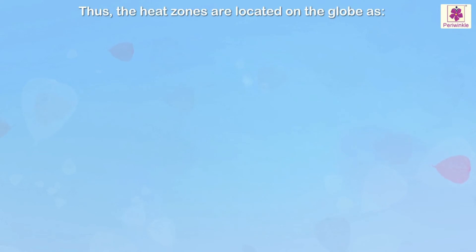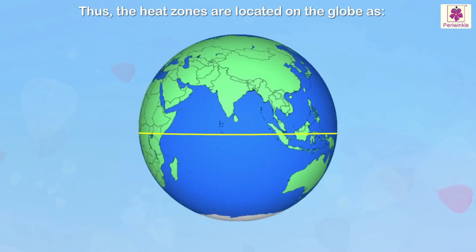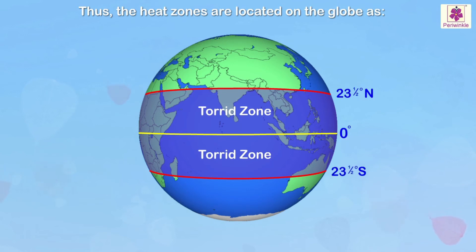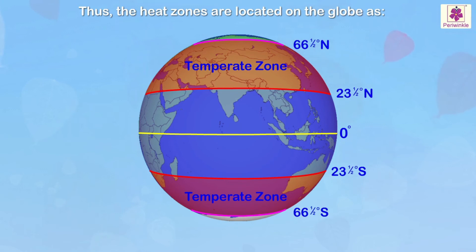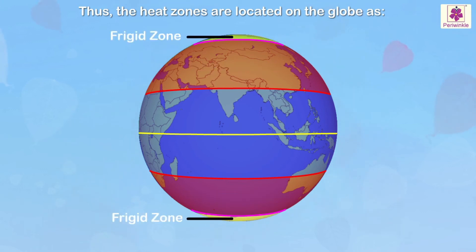The ground in frigid zones is largely frozen most of the time and is known as permafrost, which means permanently frozen ground. Thus, the heat zones are located on the globe as follows: Torrid zone — 23.5 degrees north to 0 degrees to 23.5 degrees south. Temperate zone — 23.5 degrees north to 66.5 degrees north, and 23.5 degrees south to 66.5 degrees south. Frigid zones — beyond 66.5 degrees in each hemisphere.